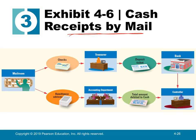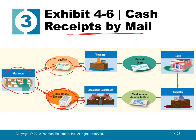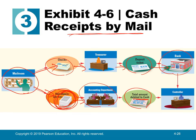When customers send checks by mail — like paying a PG&E bill — they include a remittance advice, which is the little tear-off paper showing the amount. When the mail room receives the envelope, they separate the checks and the remittance advices. The remittance advices go to the accounting department; the checks go to the treasurer. The treasurer deposits the checks; the accounting department tallies the pay stubs to determine the journal entry. At end of day, the controller compares what was deposited in the bank versus what was on those pieces of paper — they should match.